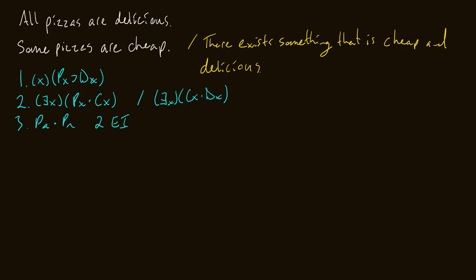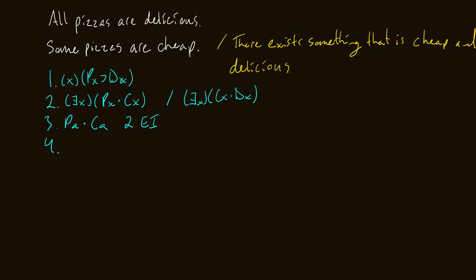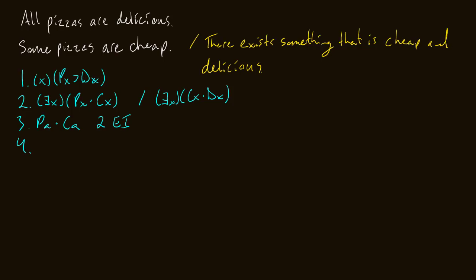Now from line one, because it's a universal statement, I can apply it to anything. I can put that conclusion on top of my existential instantiation and say: I have this thing A, it's a pizza and it's cheap. What I can also say is that if A is a pizza, then it's also delicious. I'm not making a wild assertion — I'm just saying if it's the case that it's a pizza, then it'll also be delicious.